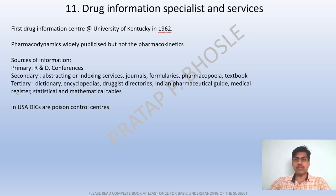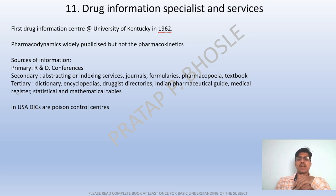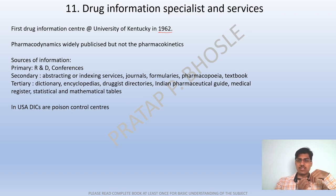The first drug information center was established at the University of Kentucky in 1962. Sources of drug information: primary sources include research, development, and conferences; secondary sources include abstract journals and formularies and pharmacopeias; tertiary sources include textbooks, dictionaries, and encyclopedias.